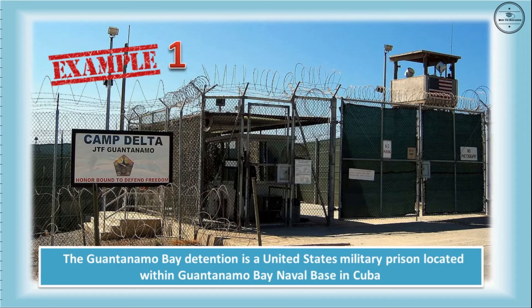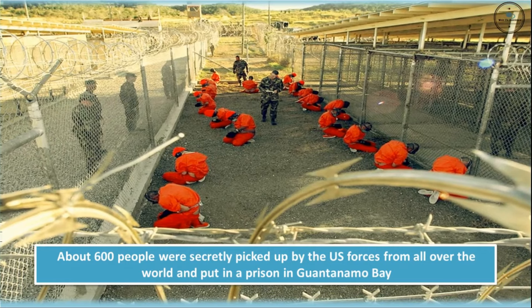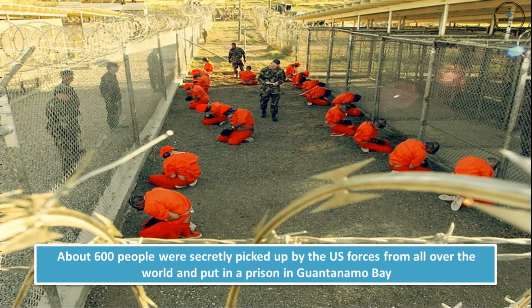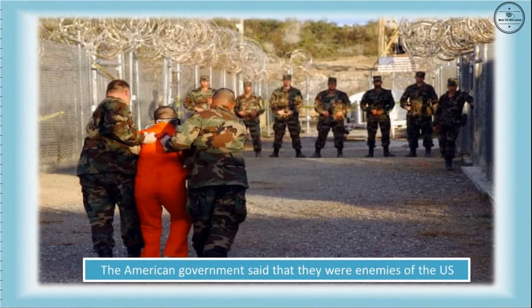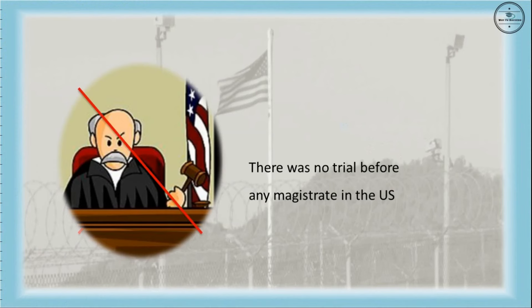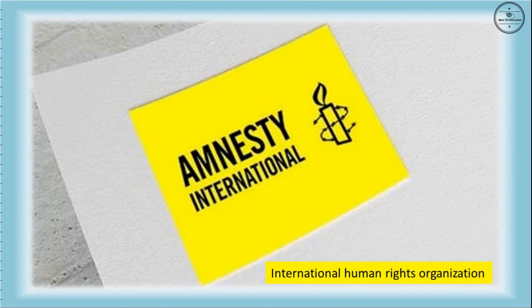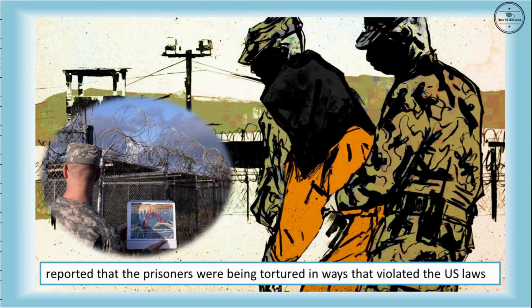The Guantanamo Bay detention is a United States military prison located within Guantanamo Bay Naval Base in Cuba. About 600 people were secretly picked up by the U.S. forces from all over the world and put in this prison. The American government said that they were enemies of the U.S. and linked to the attack on New York on 11 September 2001. There was no trial before any magistrate. Amnesty International, an international human rights organization, collected information on the condition of the prisoners and reported that they were being tortured in ways that violated U.S. laws.